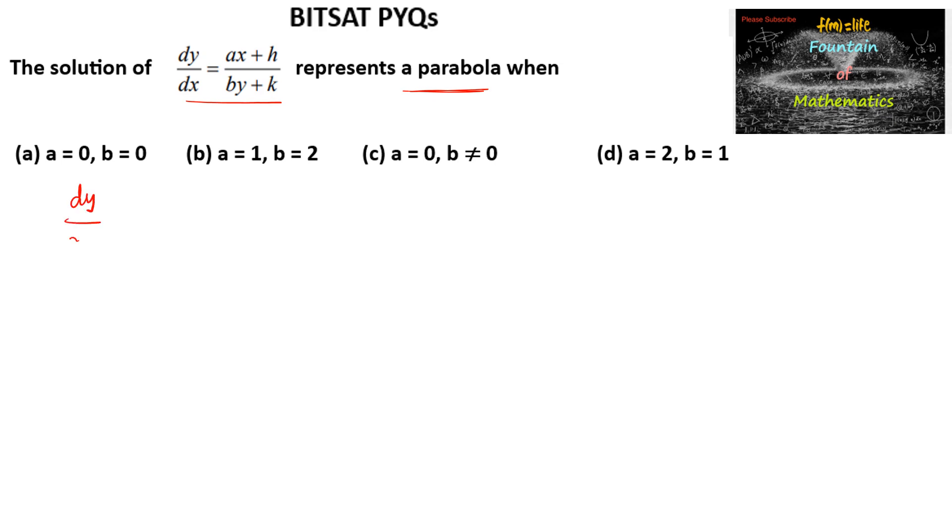Given dy/dx is equal to ax plus h upon by plus k, which implies that by plus k of dy is equal to ax plus h of dx.